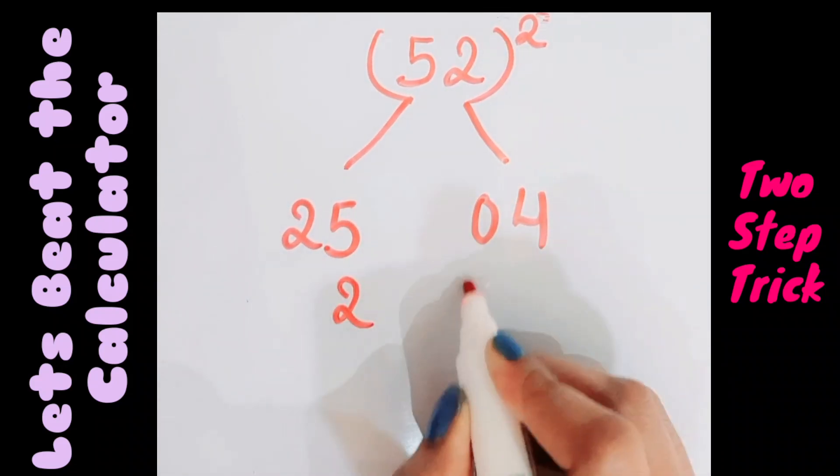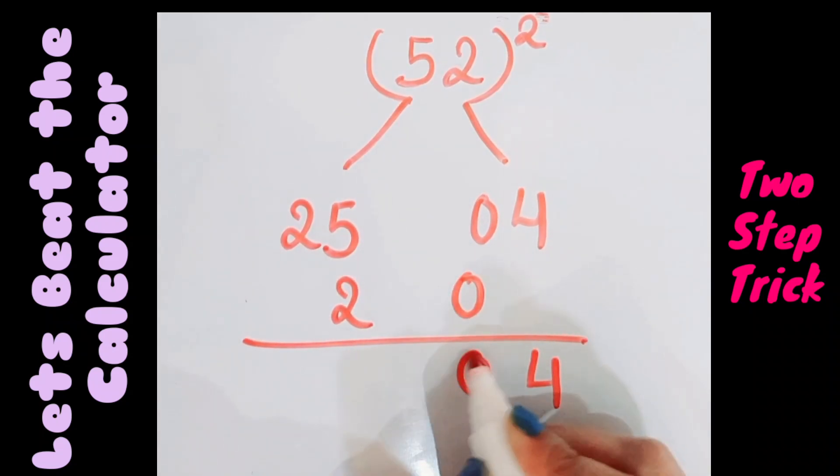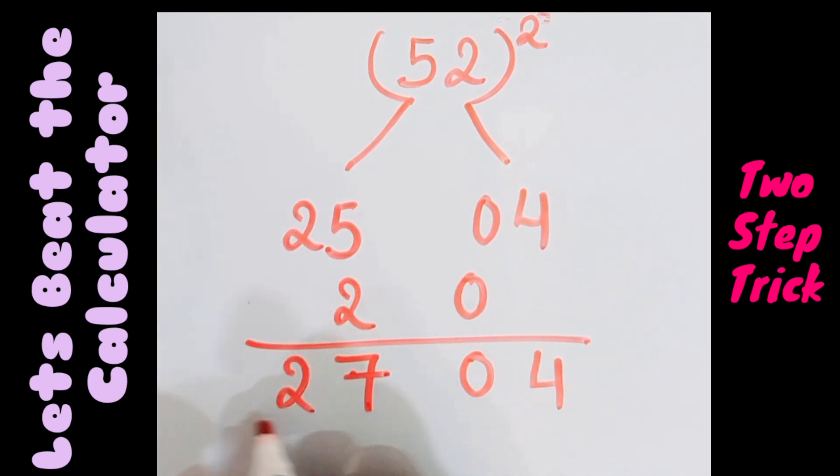Leave the first one, write it like this. So we have 4, we have 0, 5 and 2 is 7, and we have 2. So my answer for 52 square is 2704.